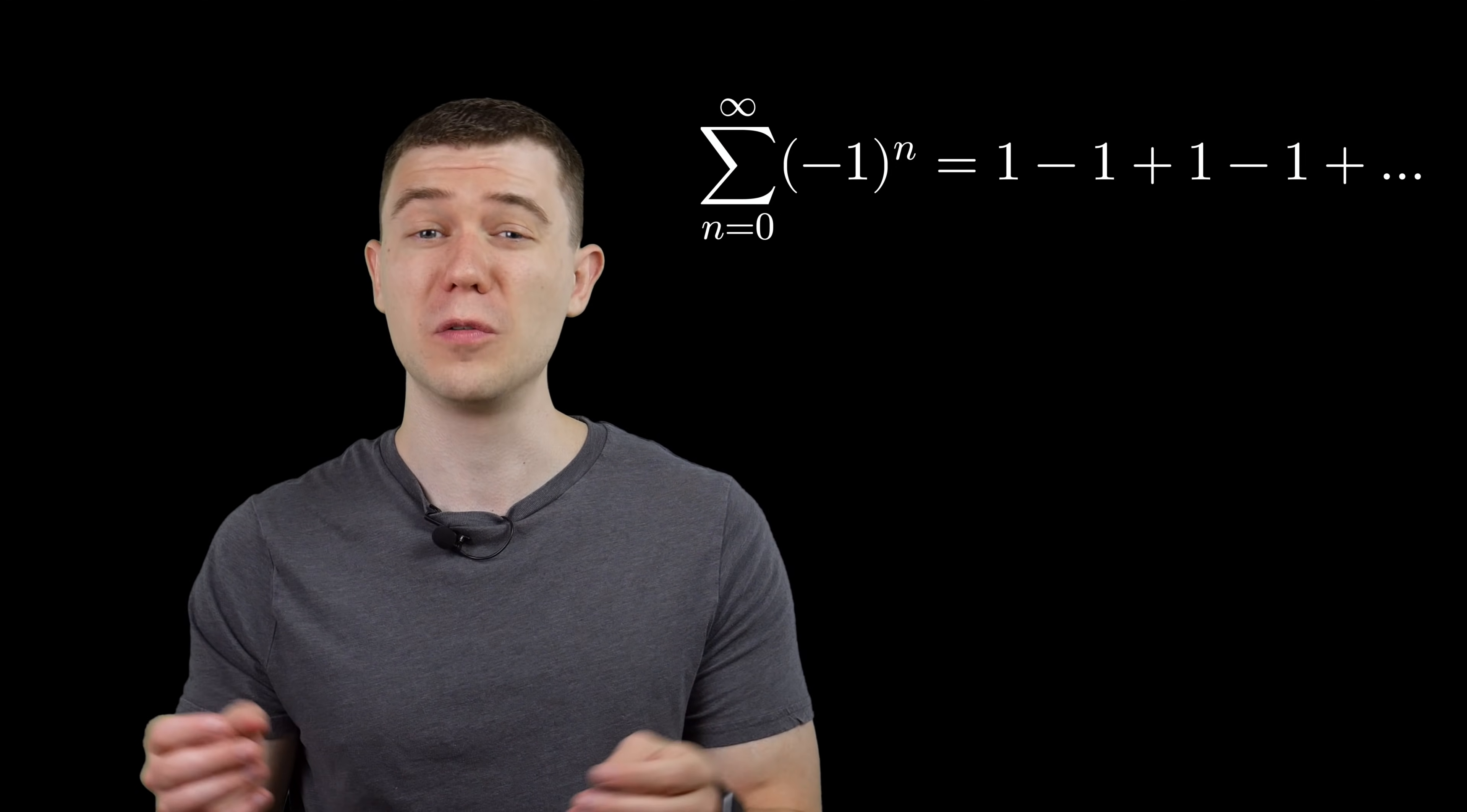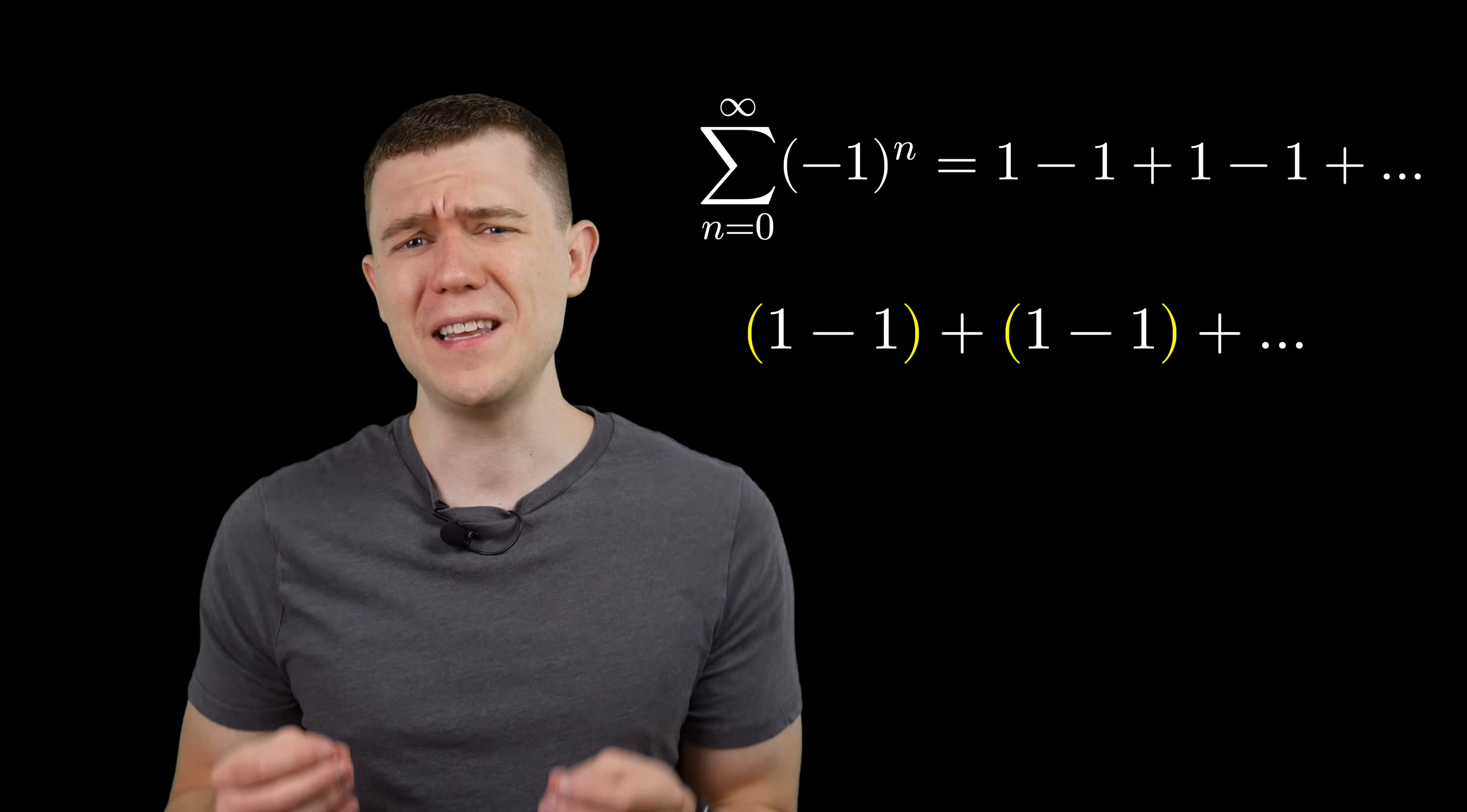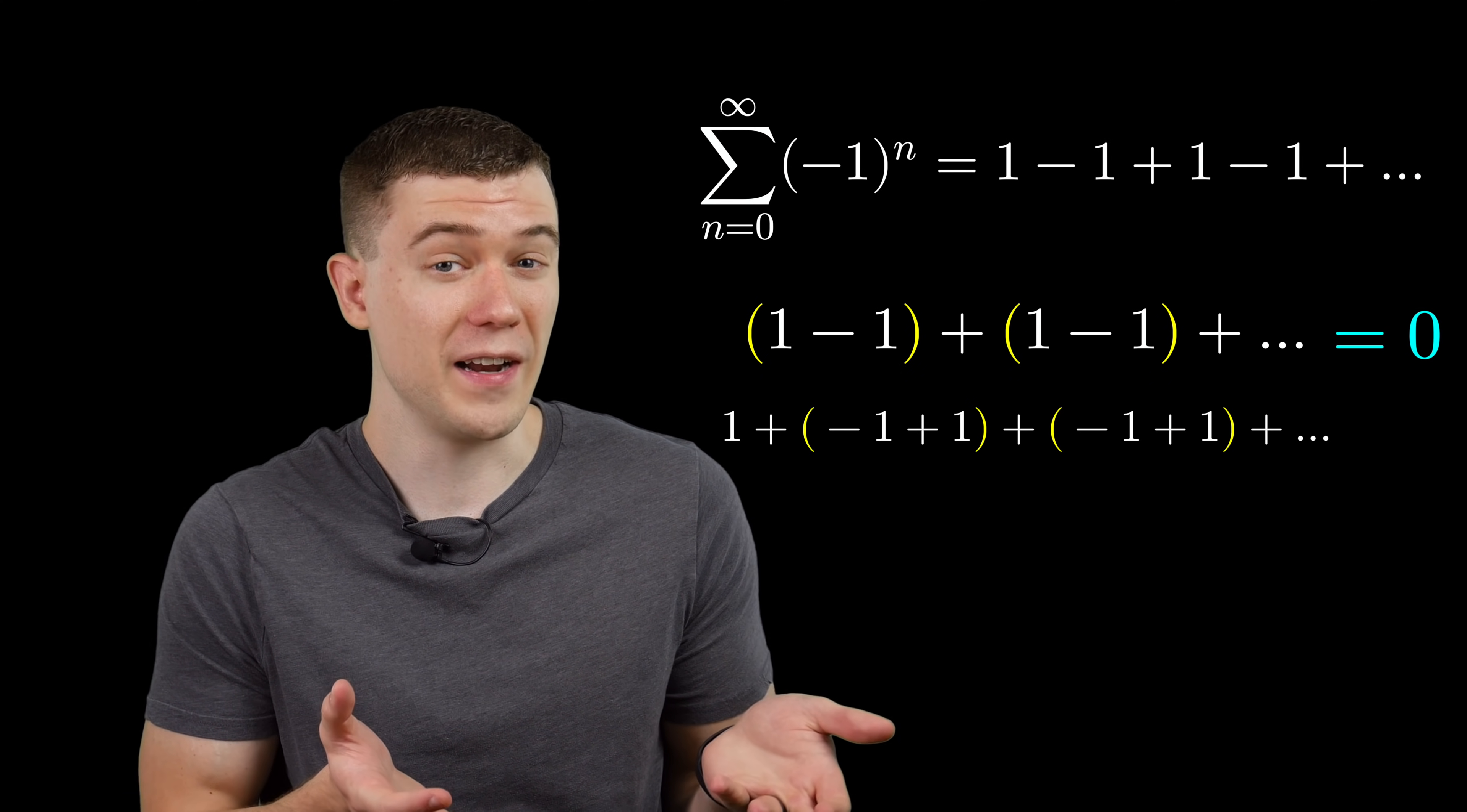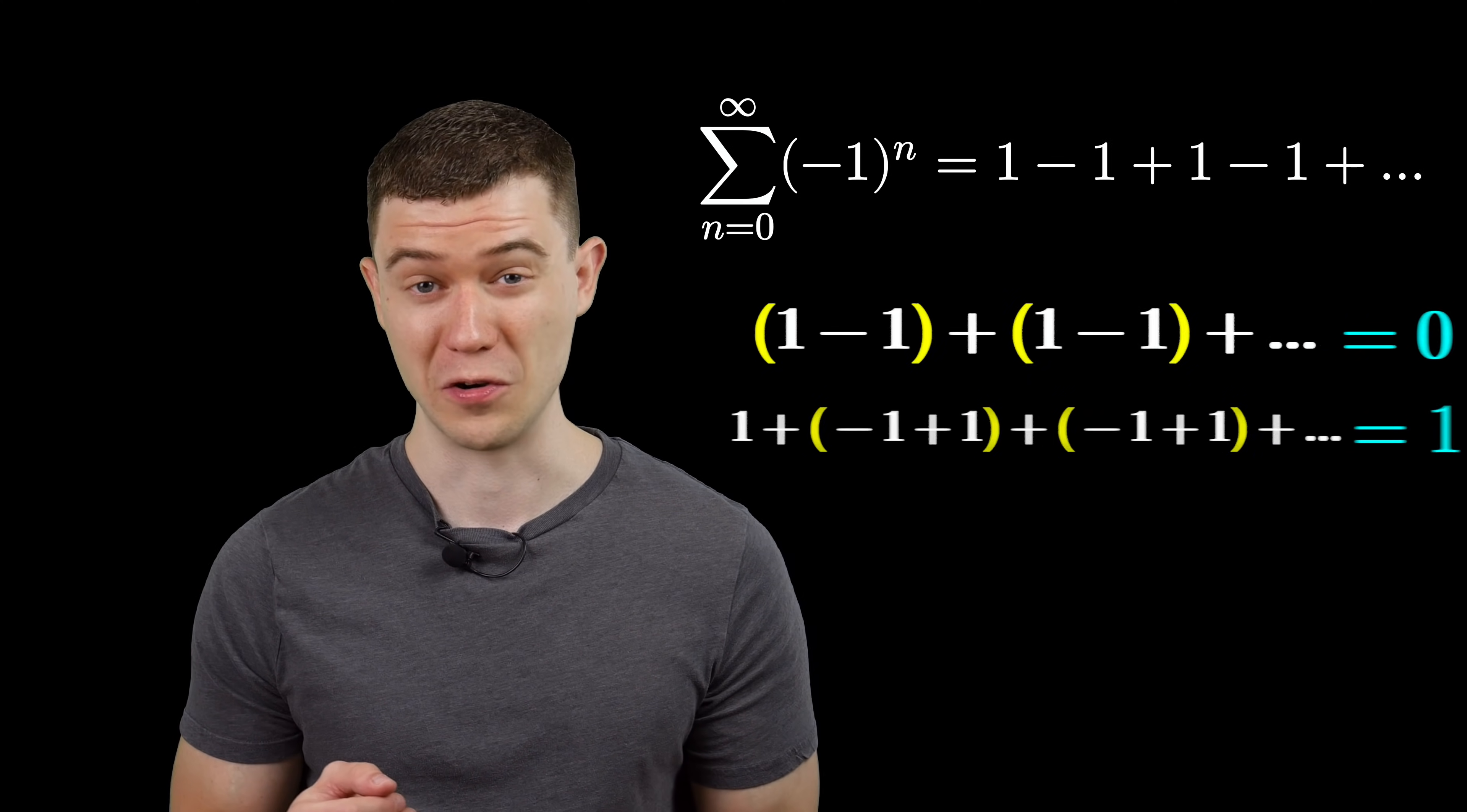I saw the unrigorous attempts at trying to sum this series. If you arrange parentheses like this, it looks like we're just adding up a bunch of zeros, and so this sum should be zero. But if you arrange parentheses like this, it looks like we're adding up one plus a bunch of zeros, and so the sum should be one. Clearly associativity wasn't going to do the job.